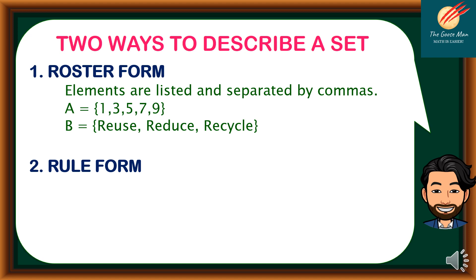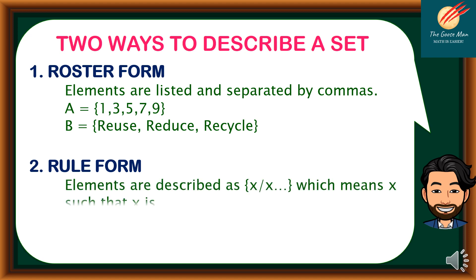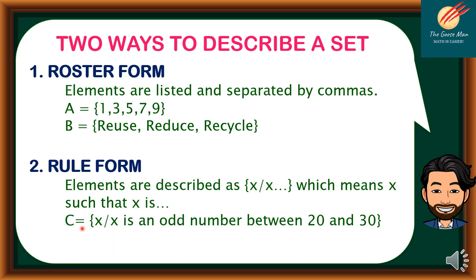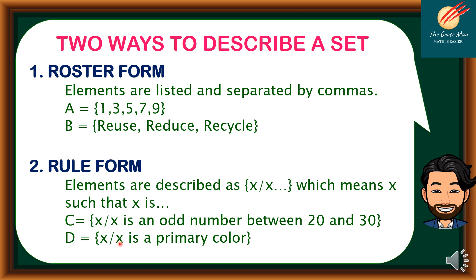Next, we have the rule form. Whenever we say rule form, elements are described as 'X such that.' The meaning of this notation is 'X such that X is...' For example, set C = {X | X is an odd number between 20 and 30}.